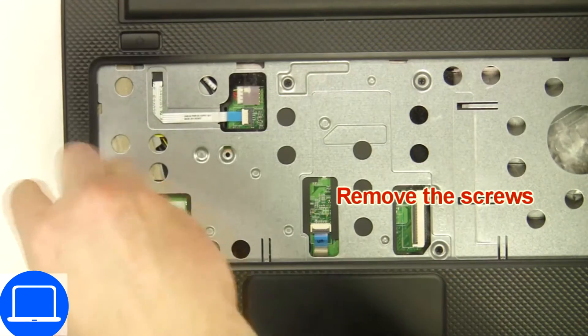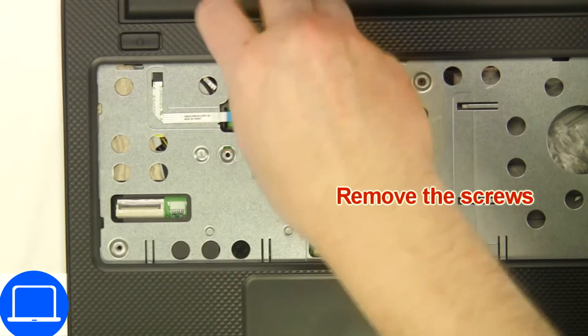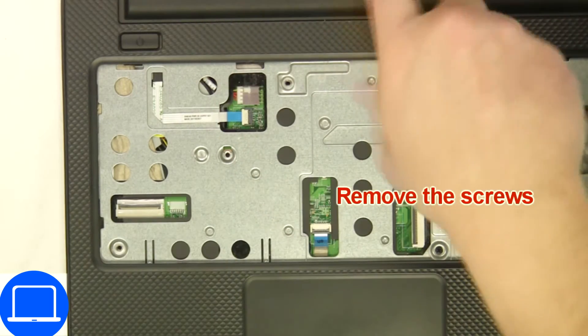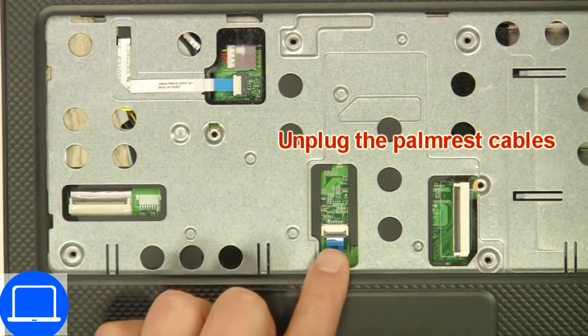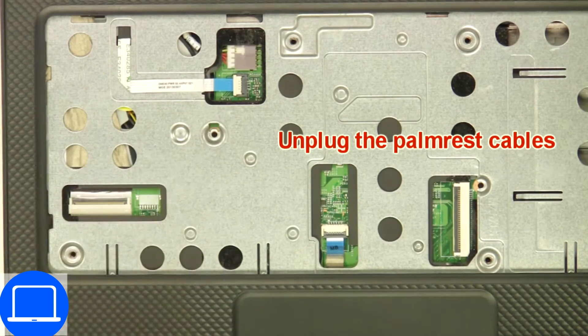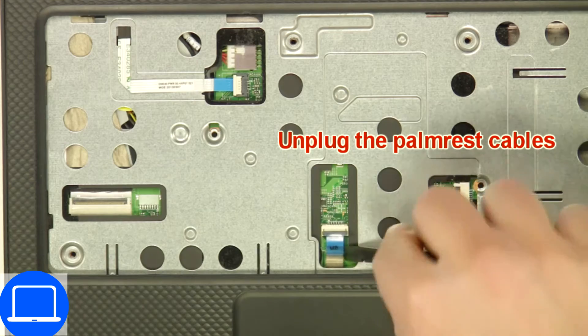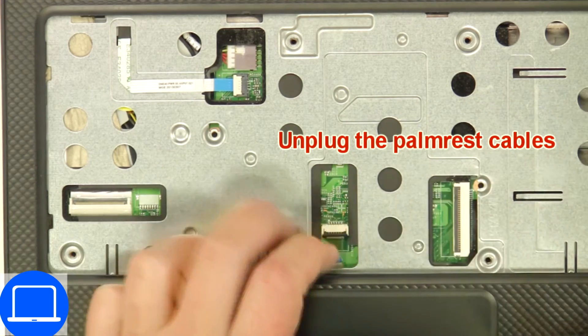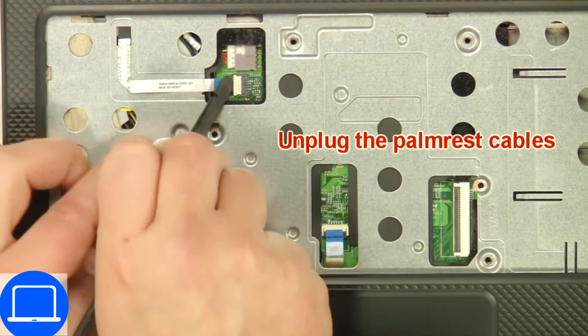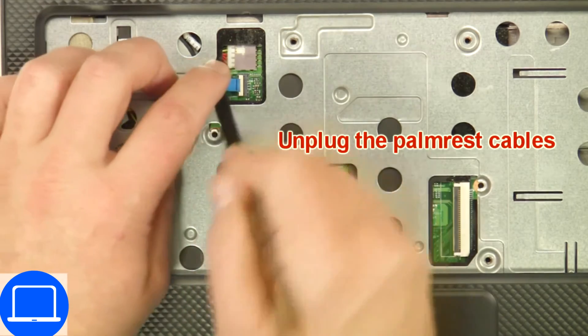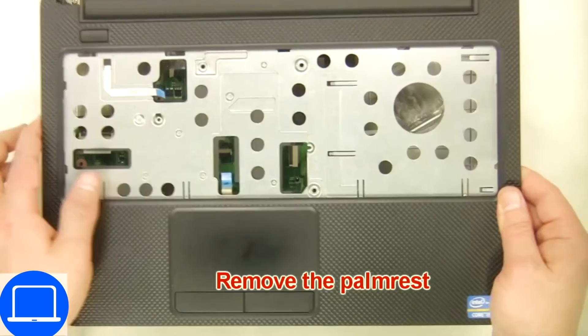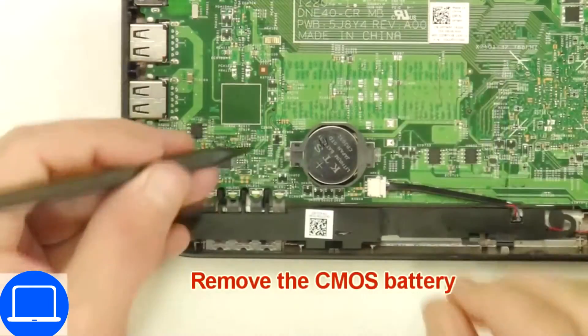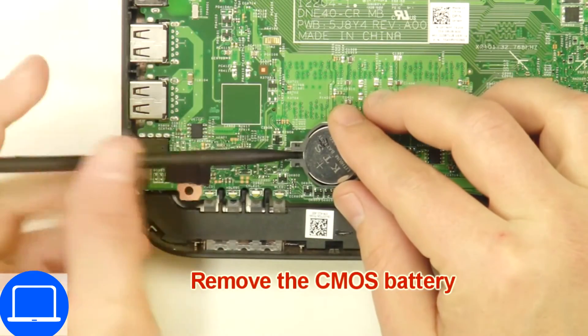Now unscrew and disconnect palm rest. Now use thin object to pry out CMOS battery.